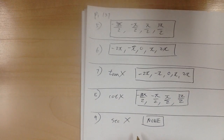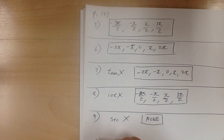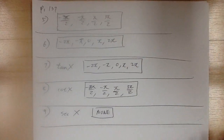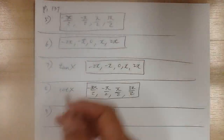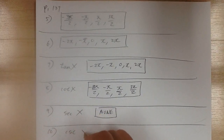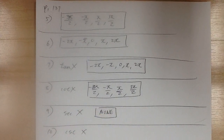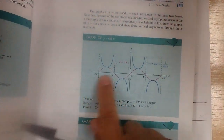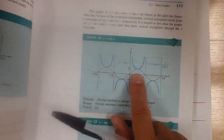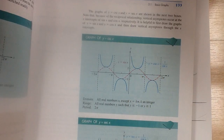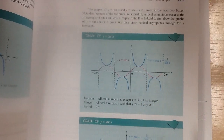For number 10, cosecant of x — looking at the cosecant graph, it doesn't cross the x-axis either, so there is no x-intercept. The answer is none.